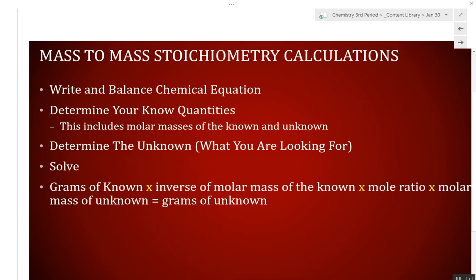Here's what we're going to do. Mass to mass. This is new. The first thing you always have to do is write and balance the chemical equation. Then, determine your knowns. What do you know about the problem? That usually has a number attached to it, but it also includes the molar masses of both the known and unknown, and the mole ratio. Then, you determine the unknown. What are you looking for?